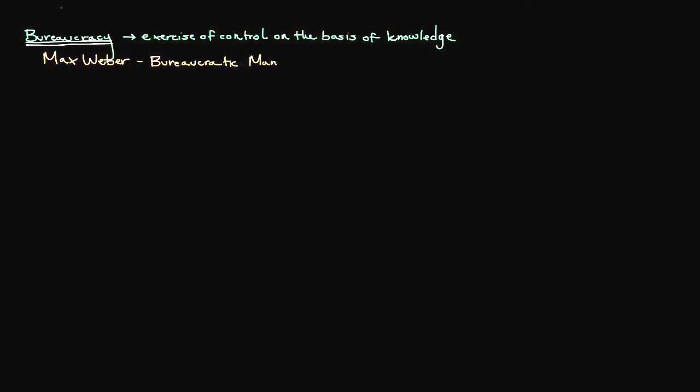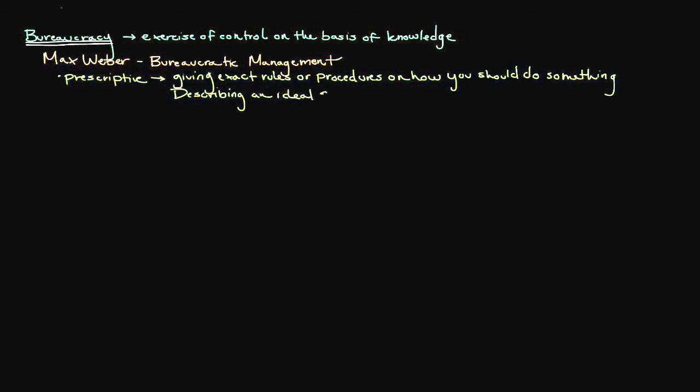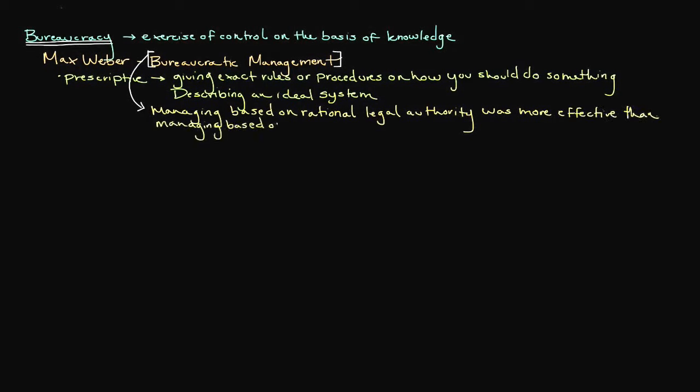It was because of this that a German sociologist by the name of Max Weber developed what is referred to as bureaucratic management. Weber's work was prescriptive in nature, meaning it was describing an ideal system as opposed to one that currently existed or would ever possibly exist. The underpinning of bureaucratic management is that managing based on rational legal authority, which stems from rules and other controls, was more effective than managing based upon subjective criteria such as favoritism and nepotism.